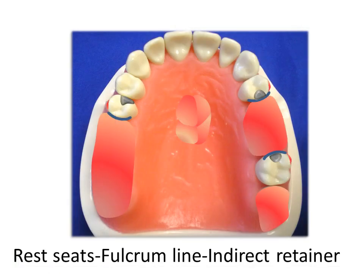The abutment teeth in this example are examined on the articulator. We prefer that areas of rest preparation are not located in areas of habitual occlusion. We locate the rest seats as indicated in the diagram. These locations are easily accessible and may be conservatively prepared. The marginal ridge reduction is 1.5 mm. These rest seats are spoon-shaped with the deepest portion about 2 mm. Forming the rest seat in this way will direct forces down the long axis of the abutment tooth. It is important to avoid preparations that act as inclined planes.